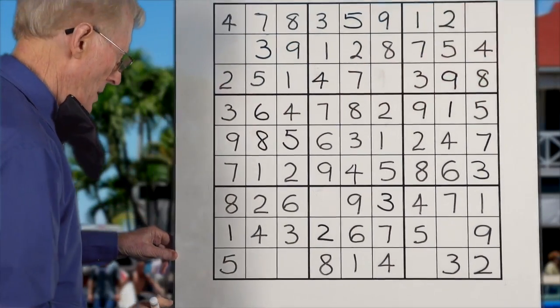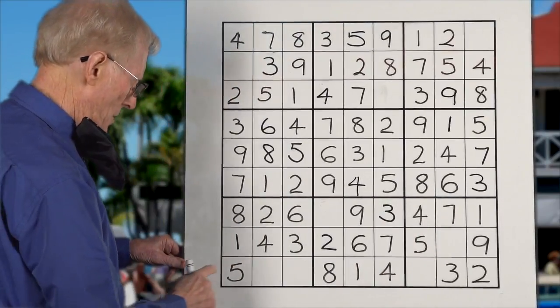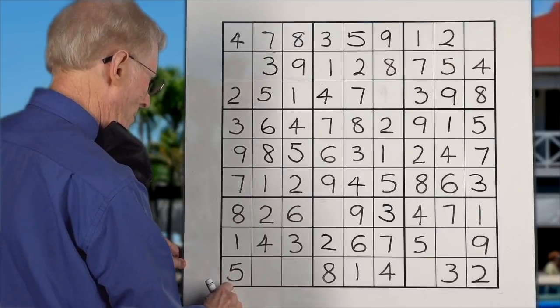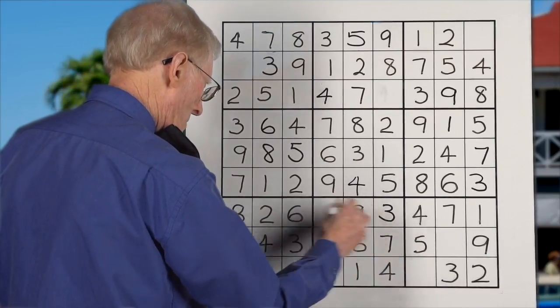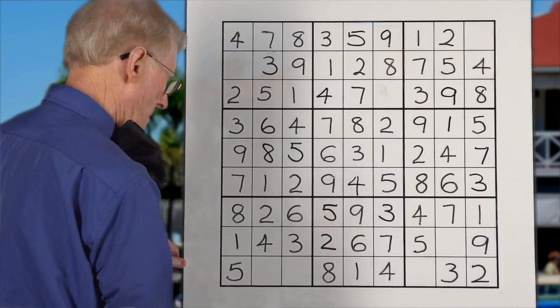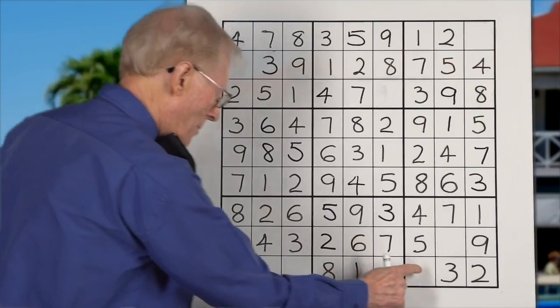Fours. Well, we got top, bottom, middle. Fives. We have five bottom, top, and a middle. So that five goes there. Sixes. We have a six, a top, middle, and a bottom.